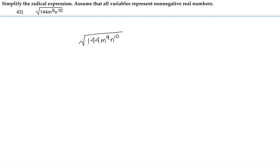Here the index isn't there, which by default means the index is 2. That means we're trying to find factors that can be grouped into 2 and take them out of the root.